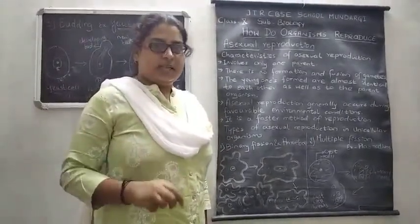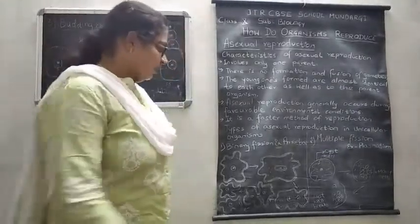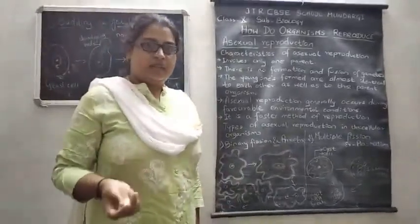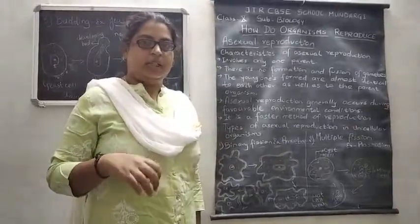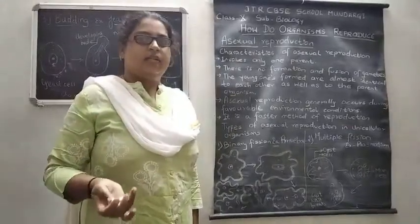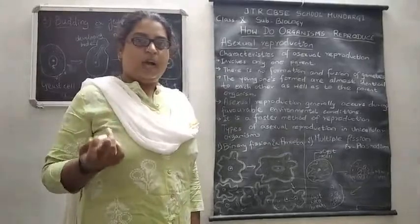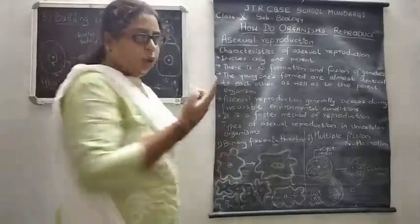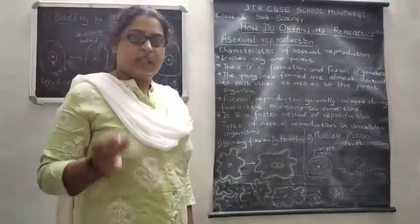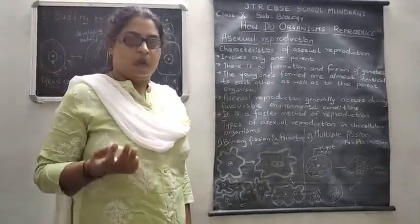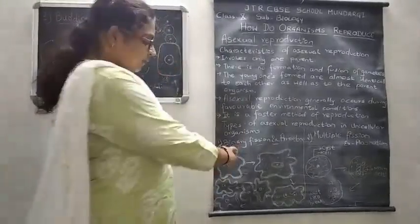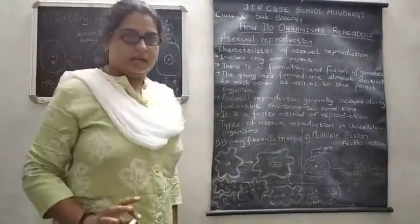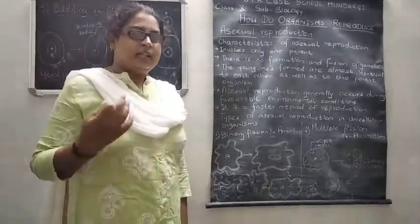The first type is binary fission. Fission means cell division. From one single cell, two identical new organisms are formed. Binary fission takes place in amoeba, which is a single-celled organism.